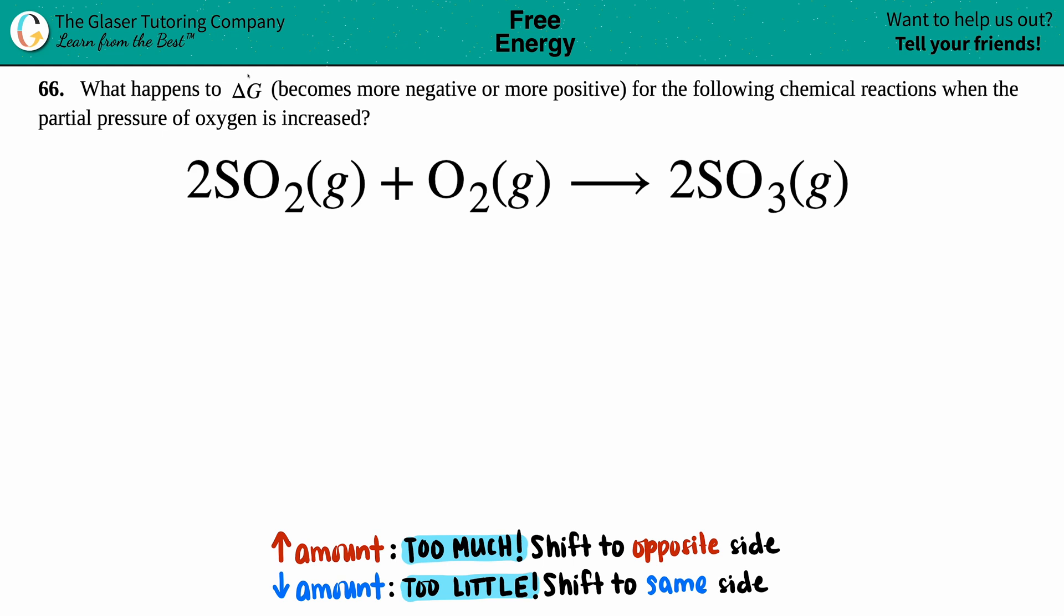Number 66: What happens to the delta G? Does it become more positive or more negative for the following chemical reactions when the partial pressure of oxygen is increased? We have a balanced equation: 2SO2 gas plus O2 gas yields 2SO3 gas.